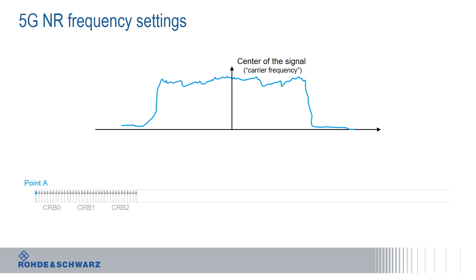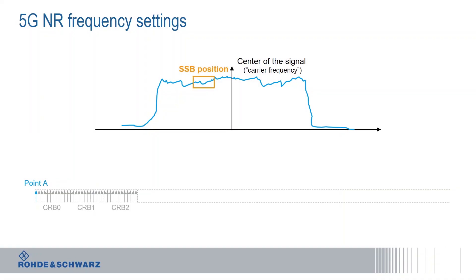Note that these common resource blocks are not used directly for spectrum allocation. They should be thought of as identifying the frequency position, because due to the introduction of various numerologies and parameters, the resource block size — still defined by 12 sub-carriers — is not constant anymore. So if we now think about synchronization signal blocks, by definition they can take basically any position in the frequency allocation of that signal, and we now have to define that frequency position of the SSB based on that reference point, Point A.